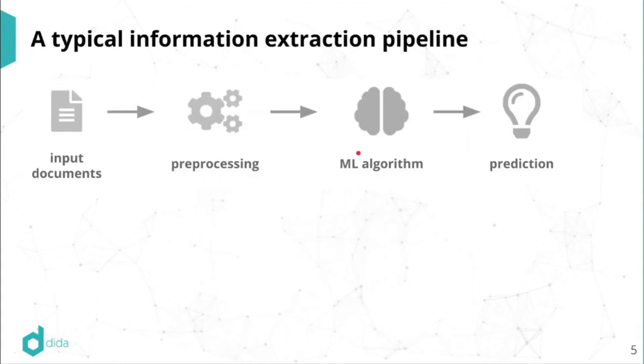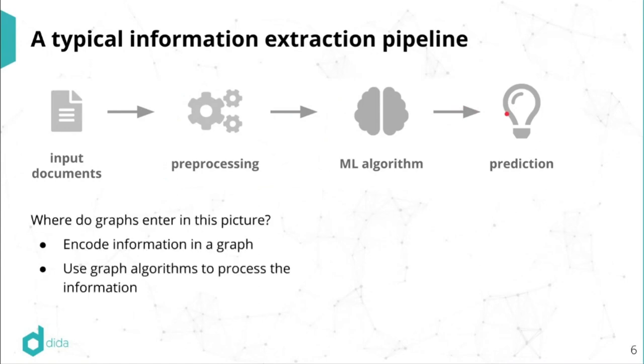All right, so here is a typical information extraction pipeline. So we have some input data, some input documents, we apply some preprocessing to it. So maybe in that case, our input was PDF files, and we preprocess in a suitable way, such that the data can be fed to a machine learning algorithm, some number crunching algorithm. And then out of this comes some useful prediction from the model.